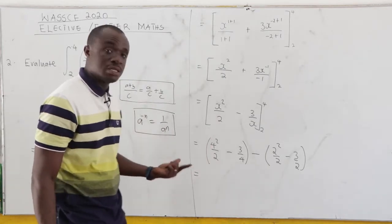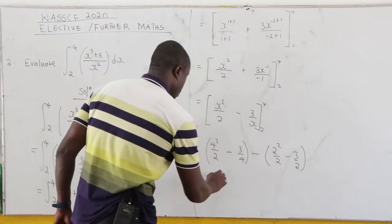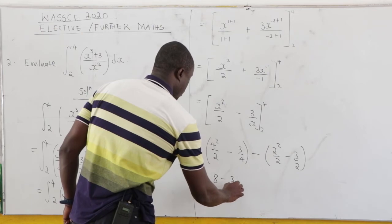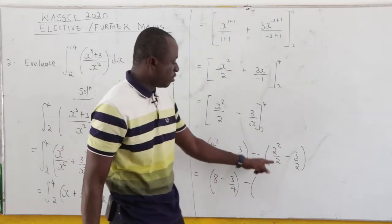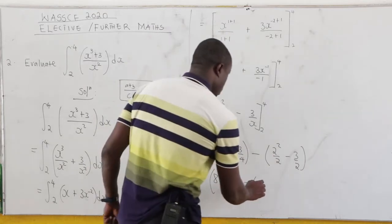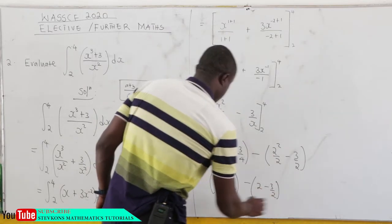Now from here, what do you have? 4 to the power 2, that is 16. 16 divided by 2, that is 8. So you have 8 minus 3 over 4 minus. Now this will give us 4 over 2, that is 2. So you have 2 minus 3 all over 2.